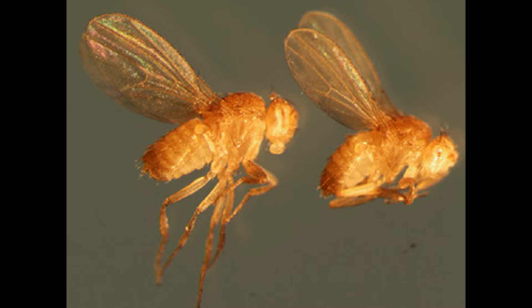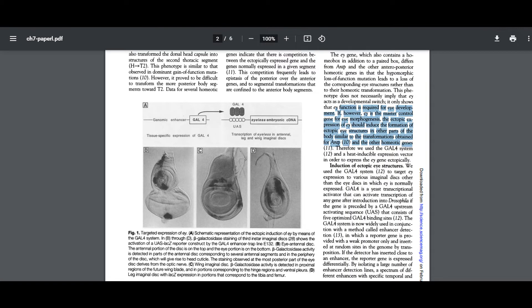At the time of the experiment, the researchers were attempting to determine the genetic reach, so to speak, of Eyeless. How many genes were under its control? How much morphology did it affect on its own? To test this, the researchers came up with the hypothesis. Quote, If, however, Eyeless is the master control gene for eye morphogenesis, the ectopic expression of Eyeless should induce the formation of ectopic eye structures in other parts of the body, similar to the transformations obtained for Antennapedia and other homeotic genes, close quote.